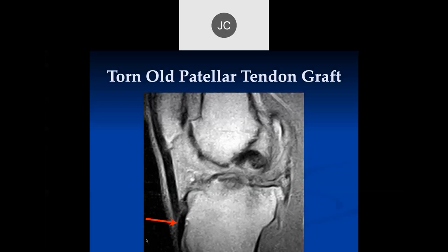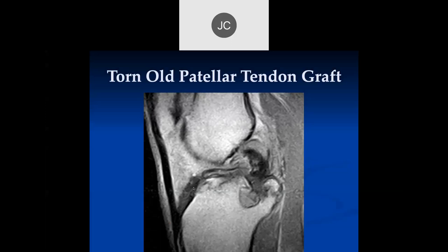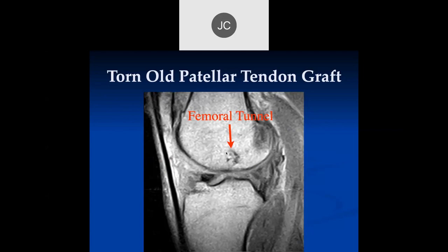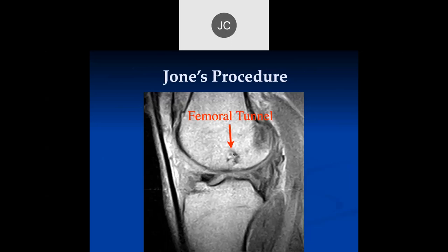Here we can see there's some tendon coming down here to the tibial tubercle, something coming up here. This is actually a native - this is a graft there. And if we keep following this, we can see a femoral tunnel which is not in a very good position. This is an old technique and tensioning it is going to be difficult - it's going to be lax in some positions and not others. That's a Jones procedure where the femoral tunnel was not in a very good location.